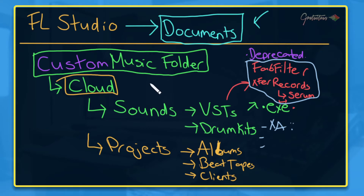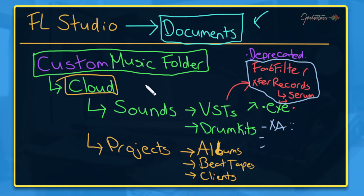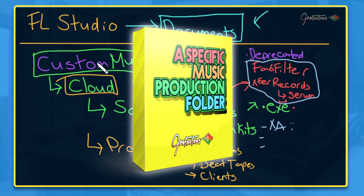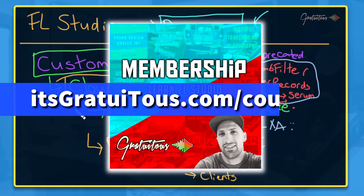Everything is backed up and if I ever need to transfer a computer, I know exactly where all my VSTs are via the executable files. The executable might be out of date but it tells you exactly which plugins you need to reinstall to get back up to speed. So there are two ways to approach it: the FL Studio built-in way, which is new and improved, or the custom cloud-based music folder. The missing files issue I experienced early on led me to create this custom approach. For more info on my custom music folder, check out my course — A Specific Music Production Folder — for just nine dollars, or access it through the membership.